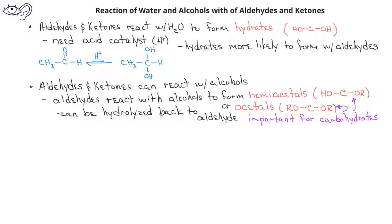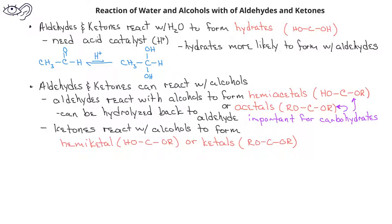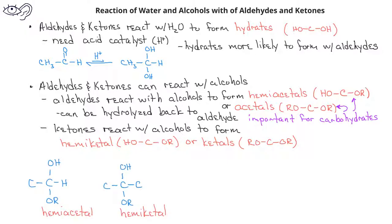If a ketone reacts with an alcohol in the presence of an acid catalyst, it will form what are known as hemiketals and ketals depending on how much alcohol is present. A hemiketal has a hydroxyl group and an alkoxide group, just like a hemiacetal, but whereas a hemiacetal has a hydrogen bonded to that carbon, a hemiketal has two carbon groups bonded to that carbon. If there's enough alcohol present, the hydroxyl group is replaced by a second alkoxide group and we would have a ketal.